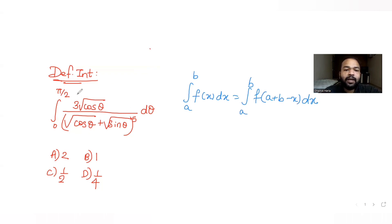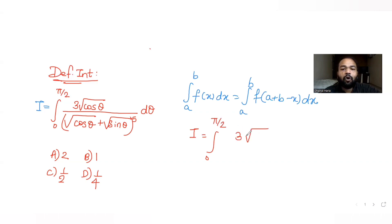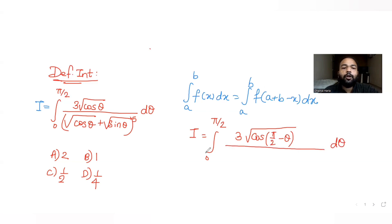So now my integral — let's call this I. With the same limits from zero to π/2, instead of cosθ I can write cos(π/2 - θ). The denominator becomes root of cos(π/2 - θ), and we apply the same substitution throughout.